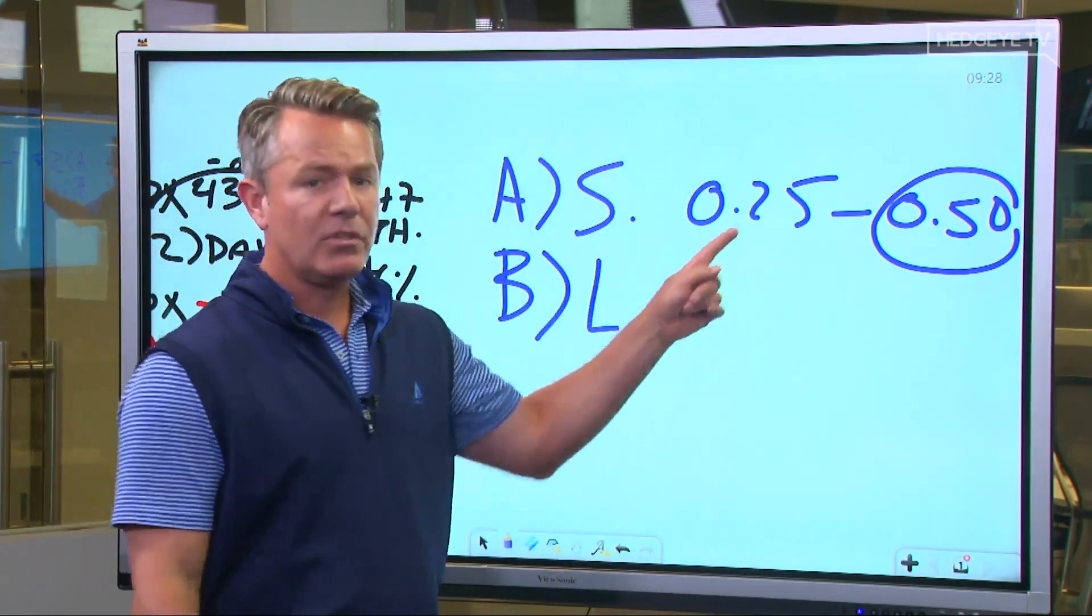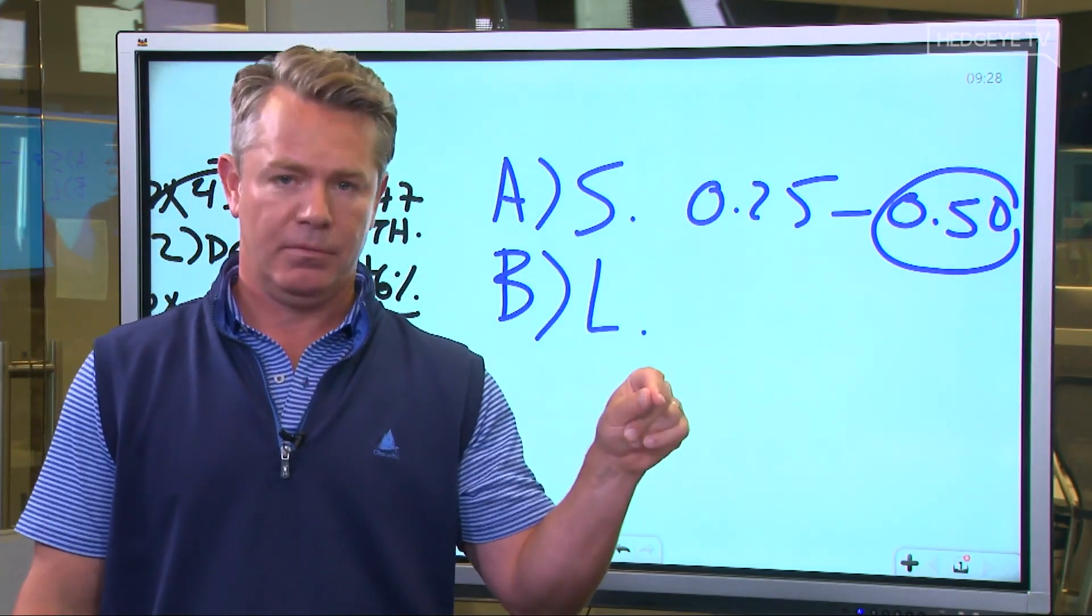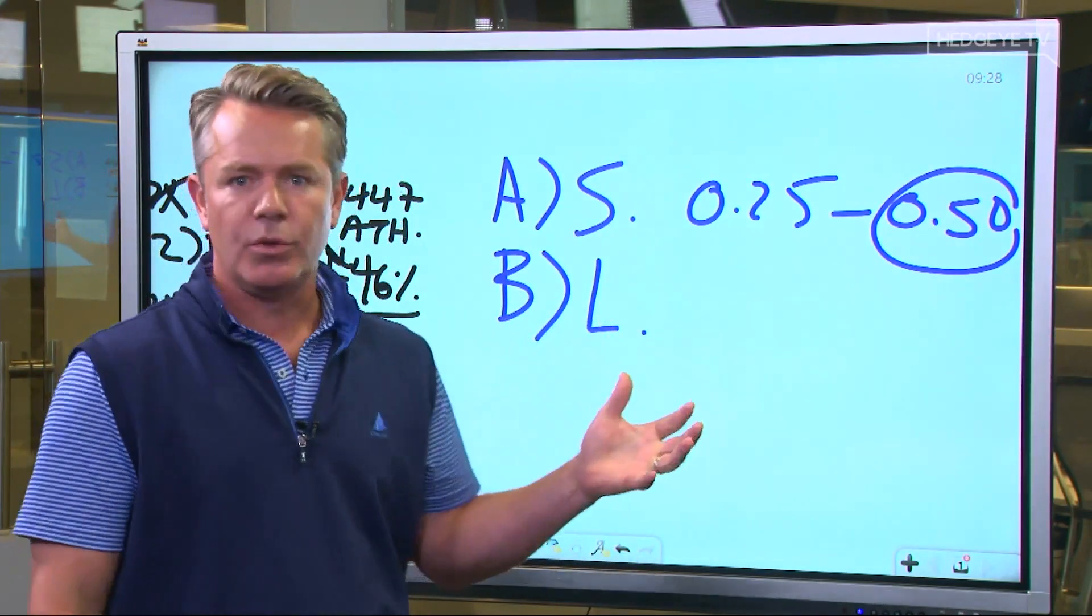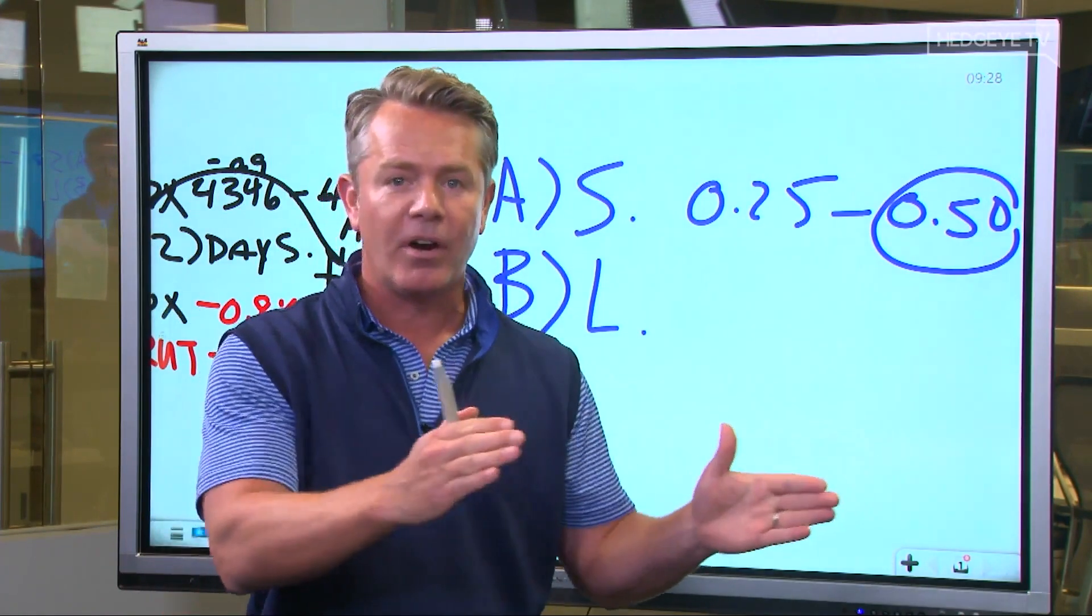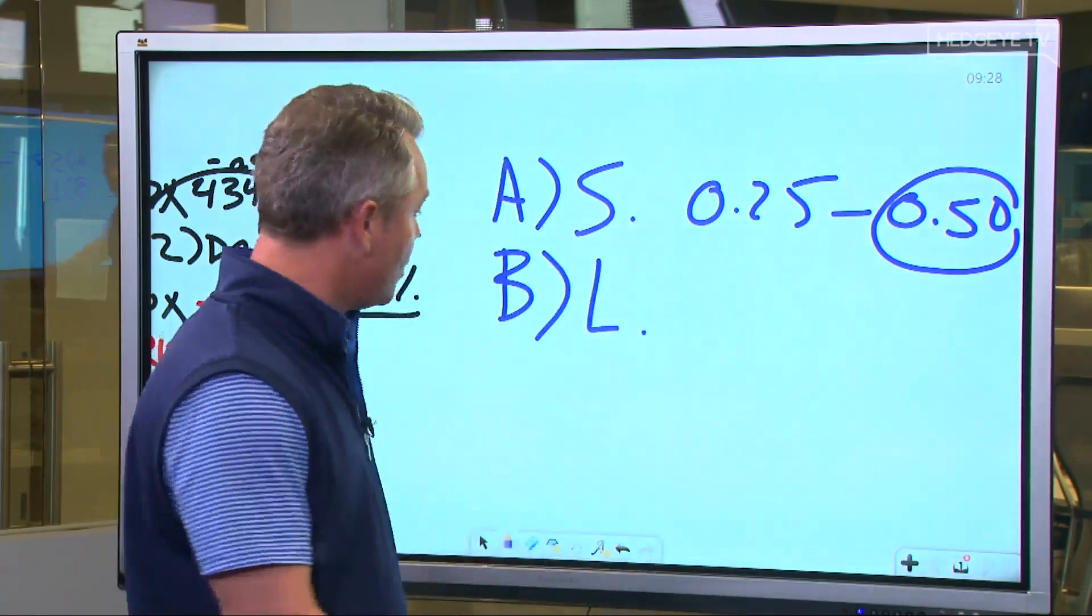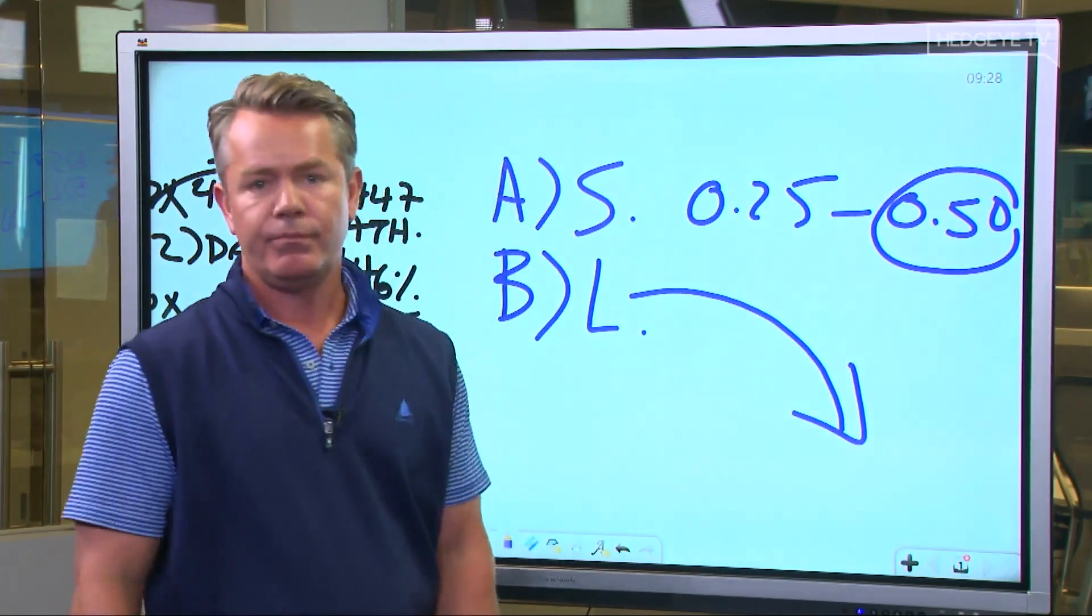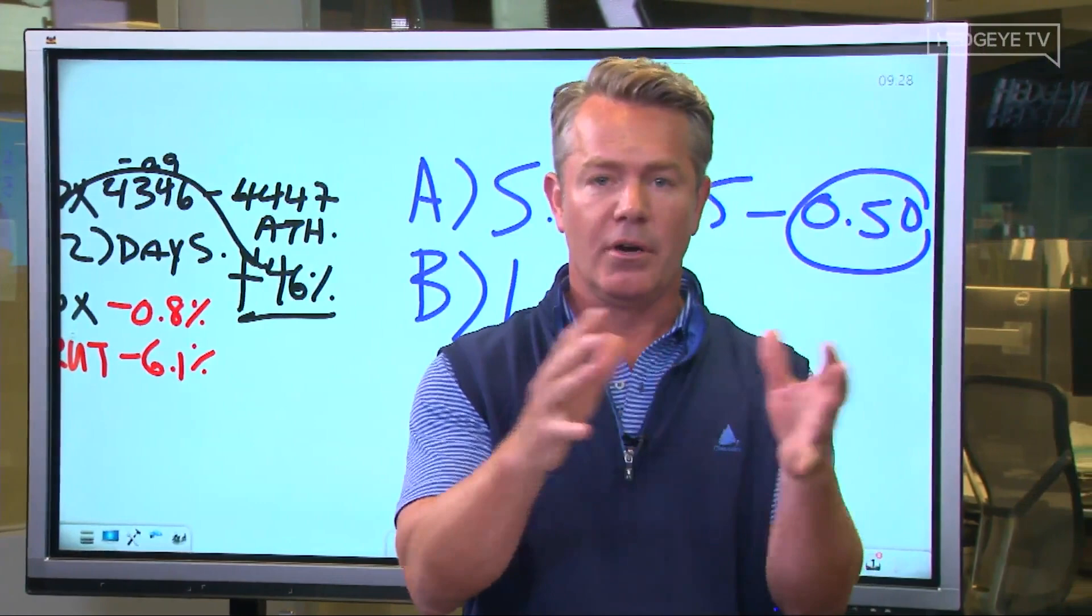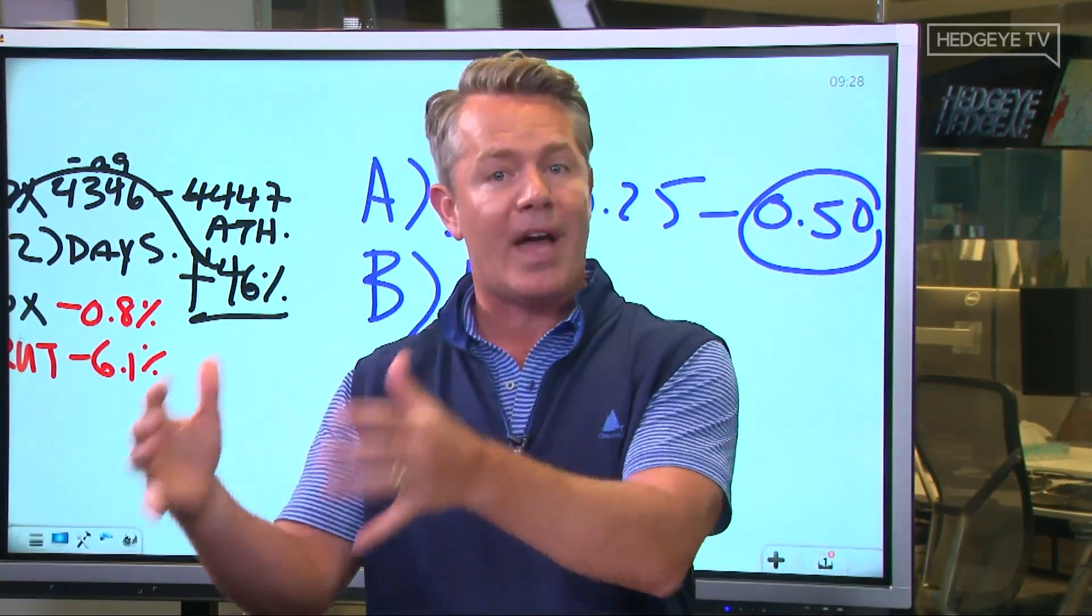What happens along that way is that the market gets scared that the Fed's going to mess up. Okay? Write that down. Yeah. They're like, oh, they're tightening into a slowdown. Because they are. Right? They're late to the party on inflation and they're tightening into a real growth slowdown, which the long end of the curve is like, whoop, I'm going down. Why? Because you already are slowing, let's just start with that, on a real basis.